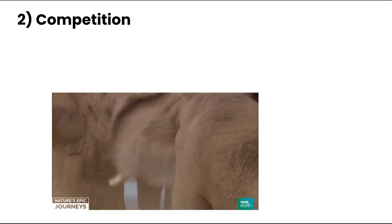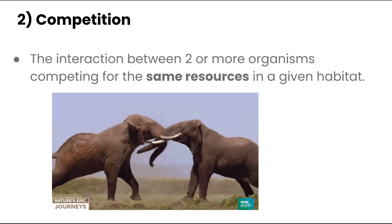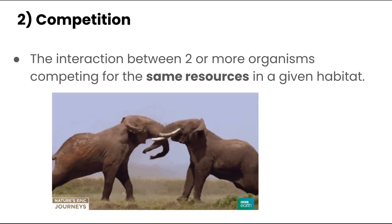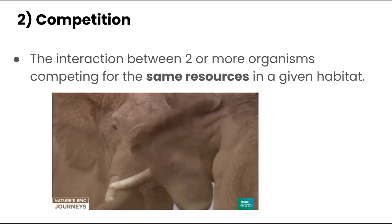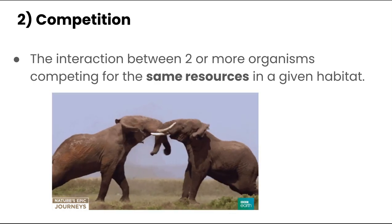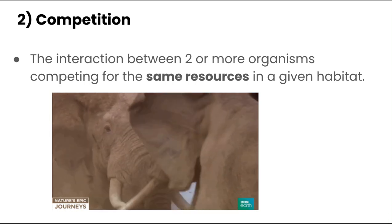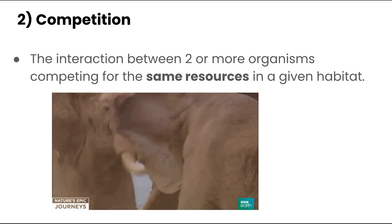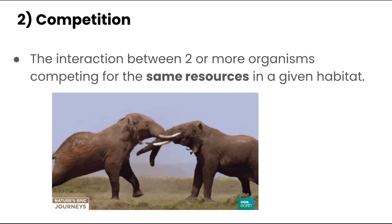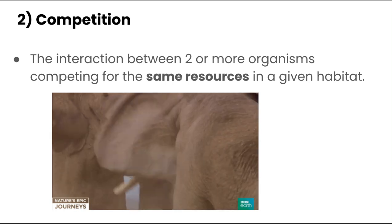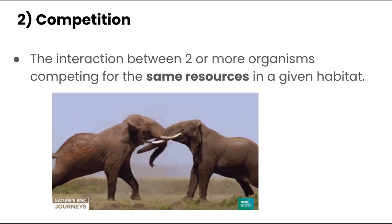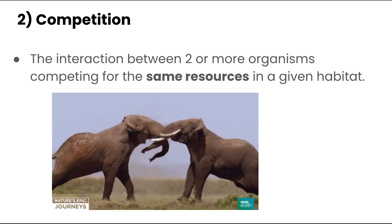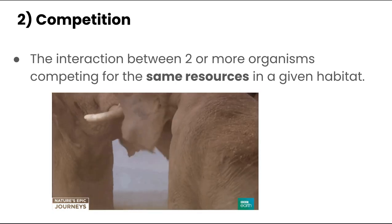The second type of interaction is competition. Competition is the interaction between two or more organisms competing for the same resources in a given habitat. This could be between members of the same species — for example, the two male elephants in our picture competing for the same mate to reproduce. Or it can be between members of different species — for example, raccoons and skunks both competing for the same food in a lawn.